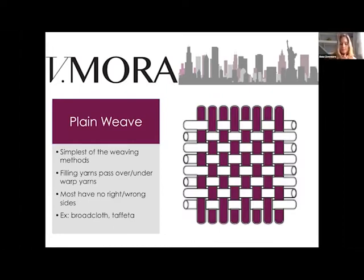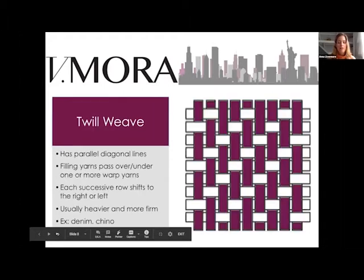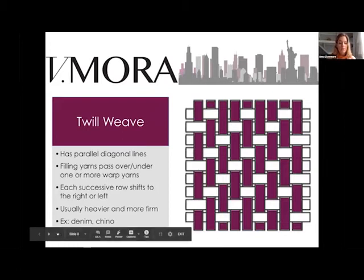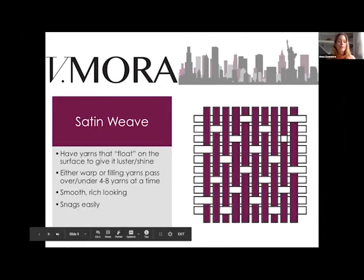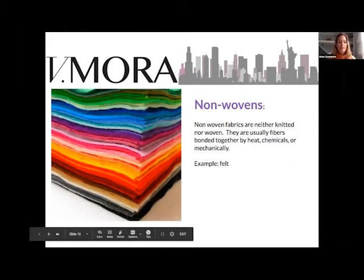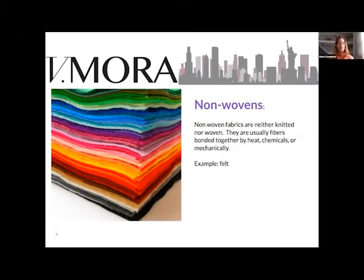Now let's talk about different types of weaves. For broadcloth and taffeta it's one-under, one-over. For denim and chino it's one-under, two-over. Then we have the satin weave, which gives it that luster because it goes over four and under one. The satin weave can snag more easily so you have to be a little more careful.